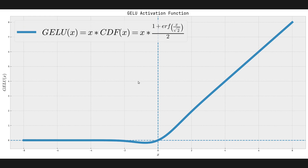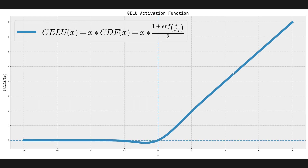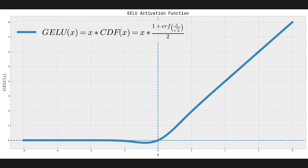In terms of the benefits of GELU, it has a lot of the benefits that ReLU has. For positive inputs we're going to have positive outputs, allowing neurons to express a stronger opinion than some other activation functions like sigmoid. One of the problems with sigmoid is that it squashes values into a 0–1 interval, which allows us to map a value to a probability, but it does not allow a neuron to express itself as well as GELU.